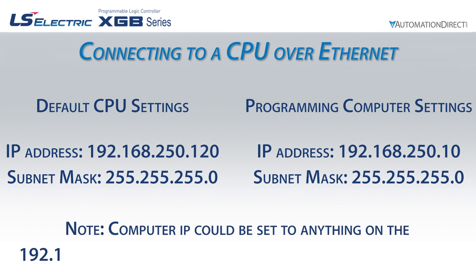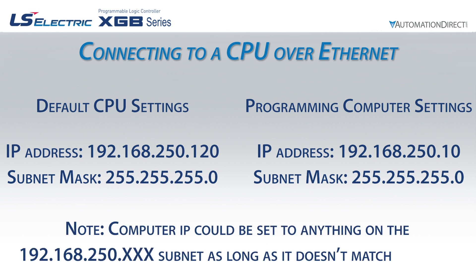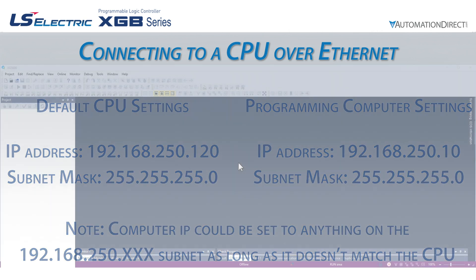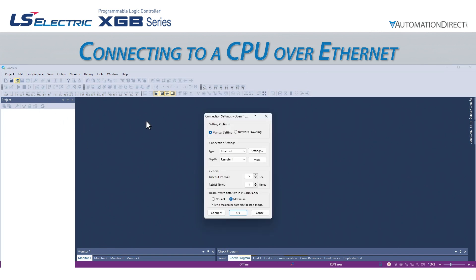Once we have set these settings in our PC, we are ready to configure the connection in the XG5000 software using the Connection Settings screen. If we attempt to upload a project from an already programmed CPU, we will automatically be taken to this Connection Settings screen to establish the connection.